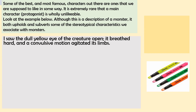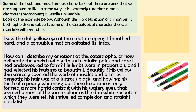I saw the dull yellow eye of the creature open. It breathed hard and a convulsive motion agitated its limbs. How can I describe my emotions at this catastrophe? Or how delineate the wretch whom with such infinite pains and care I have endeavoured to form. His limbs were in proportion and I had selected his features as beautiful. His yellow skin scarcely covered the work of muscles and arteries beneath. His hair was a lustrous black and flowing, his teeth of a pearly whiteness. But these luxuriances only formed a more horrid contrast with his watery eyes that seemed almost of the same colour as the dun white sockets in which they were set. His shrivelled complexion and straight black lips.